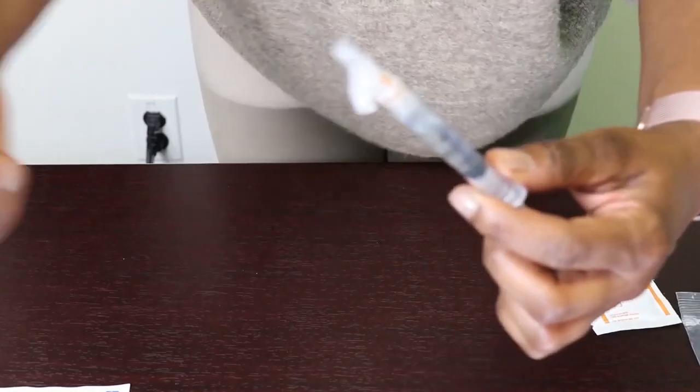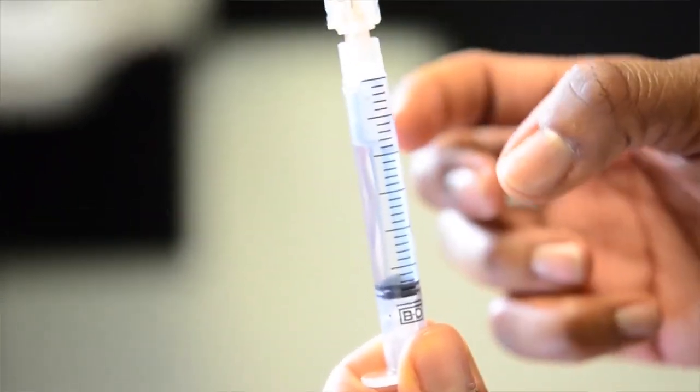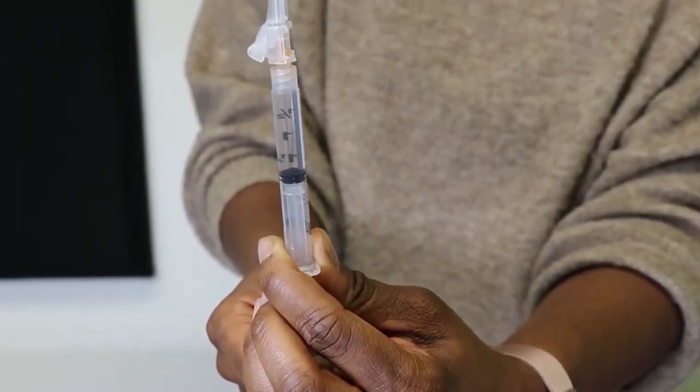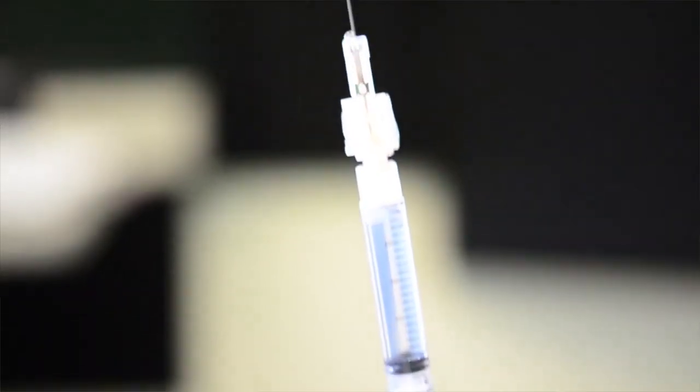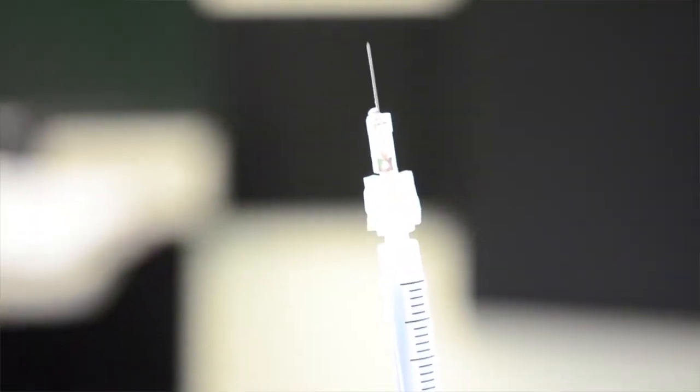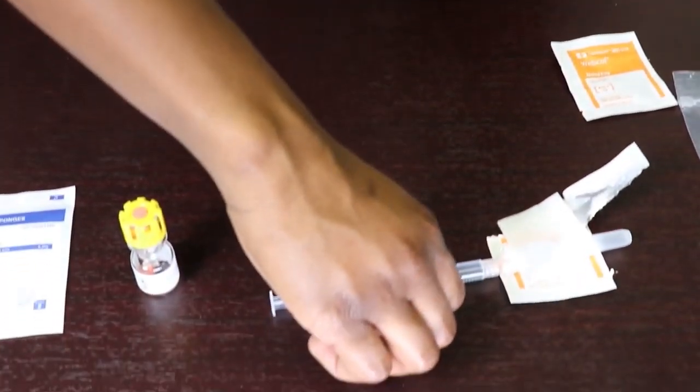Remove the needle from the vial and hold the syringe upright with the needle on top and gently flick on the syringe to move any large air bubbles to the top. Gently push the plunger until you see a few drops of fluid come out of the tip of the needle. Place the cap on the table and guide the needle into the opening of the cap using one hand, being careful to prevent sticking yourself.